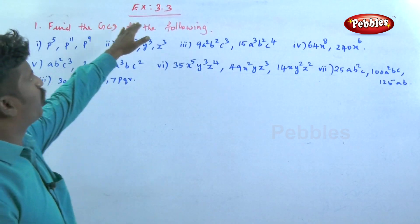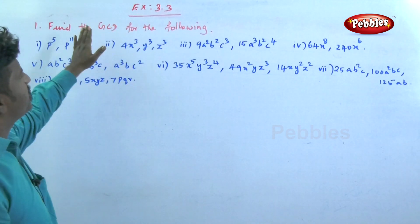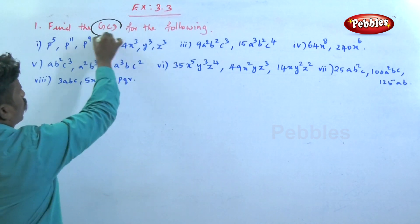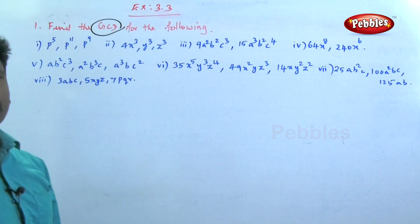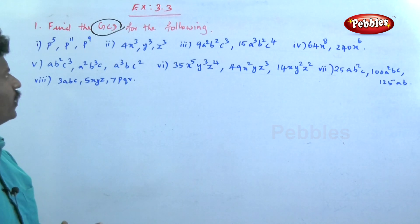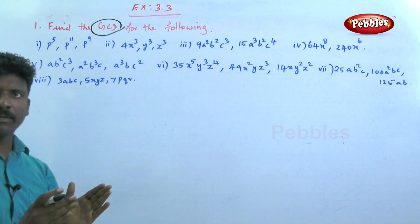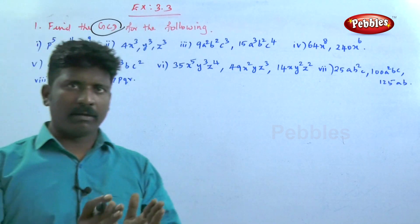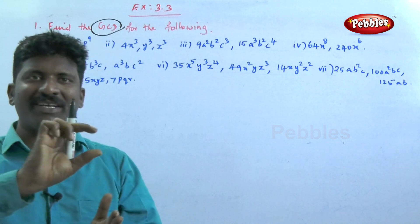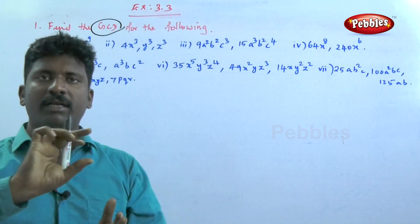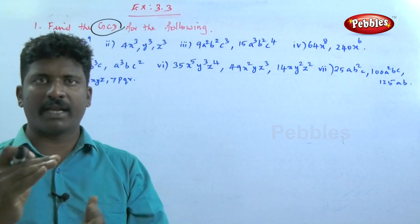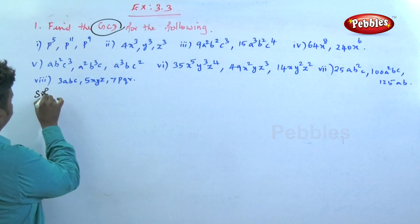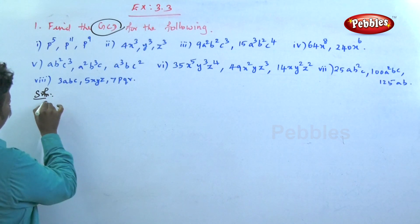See the next exercise 3.3: find the GCD for the following. GCD means the Greatest Common Divisor. A common divisor is a divisor that divides each expression. Among all common divisors, the greatest one is the GCD.